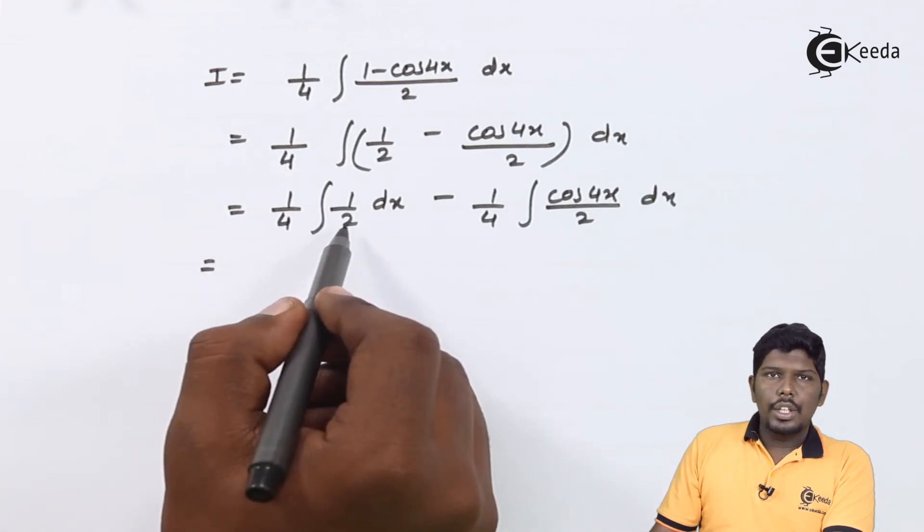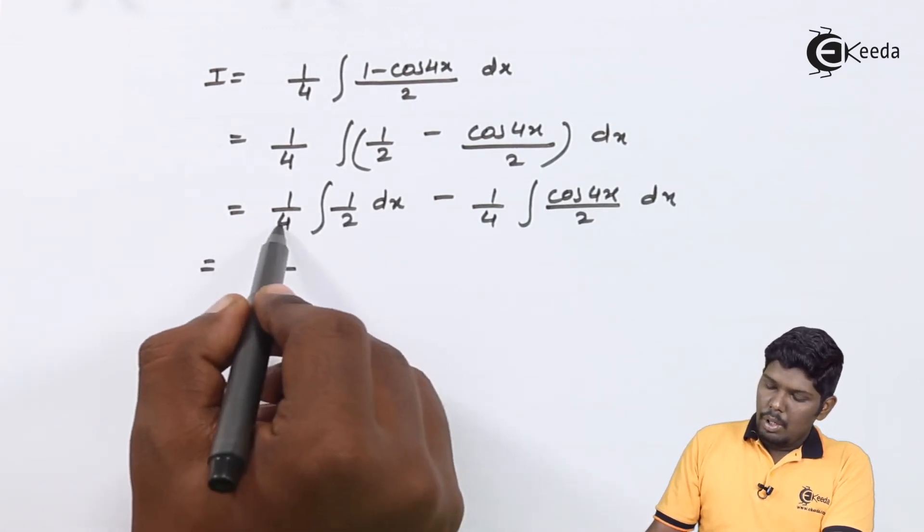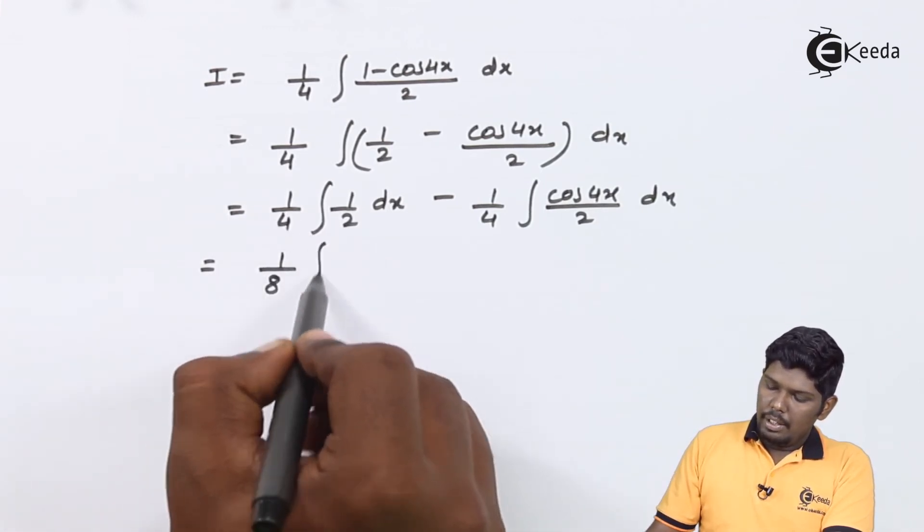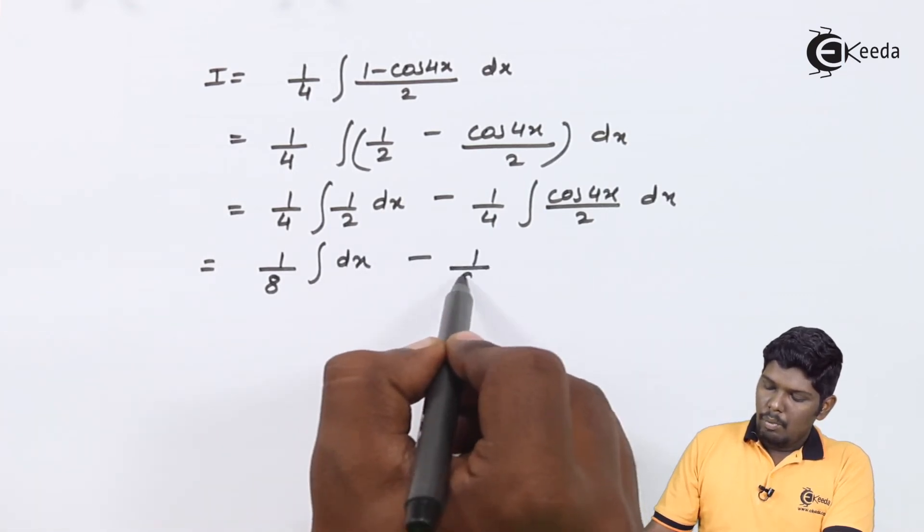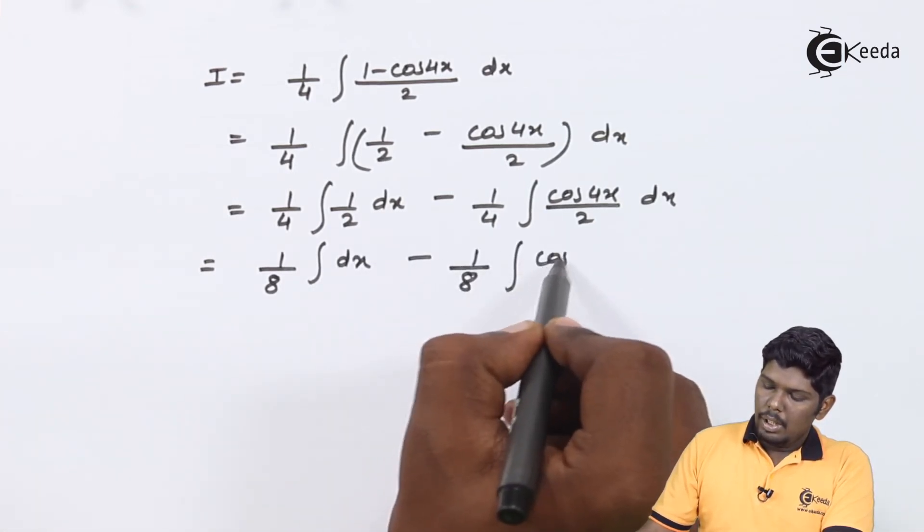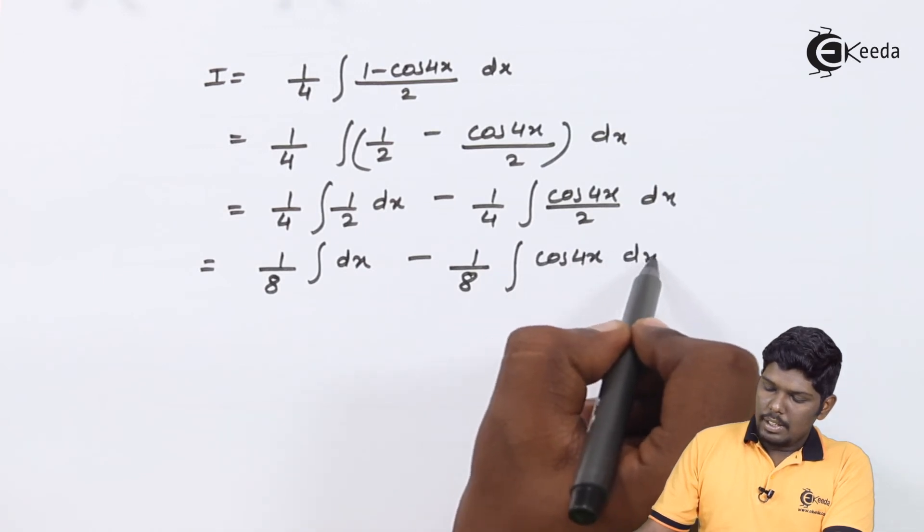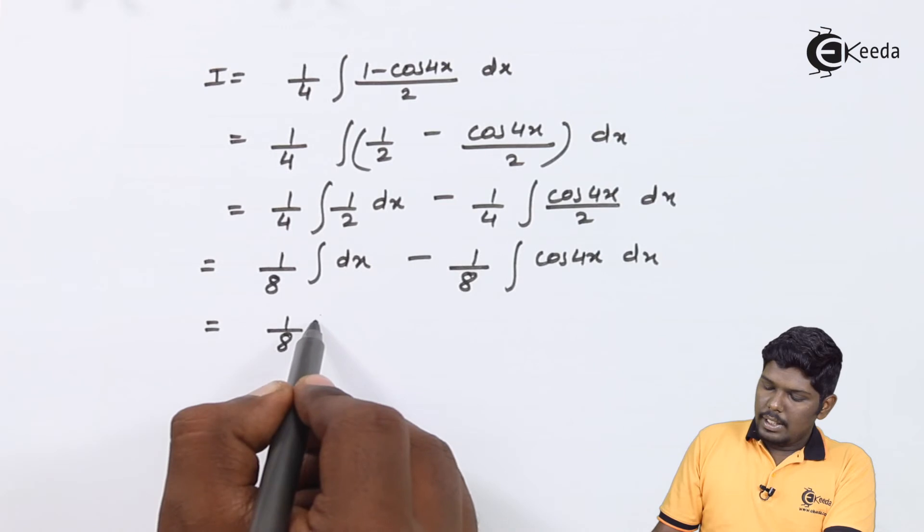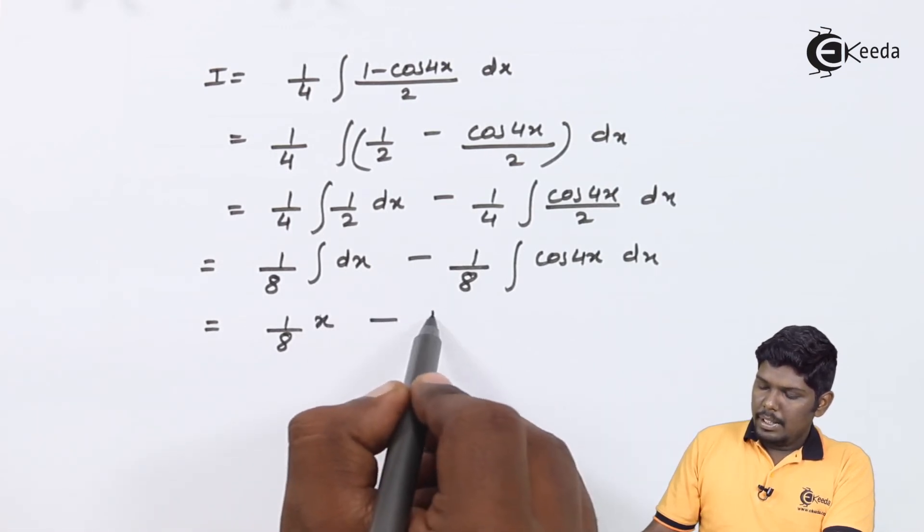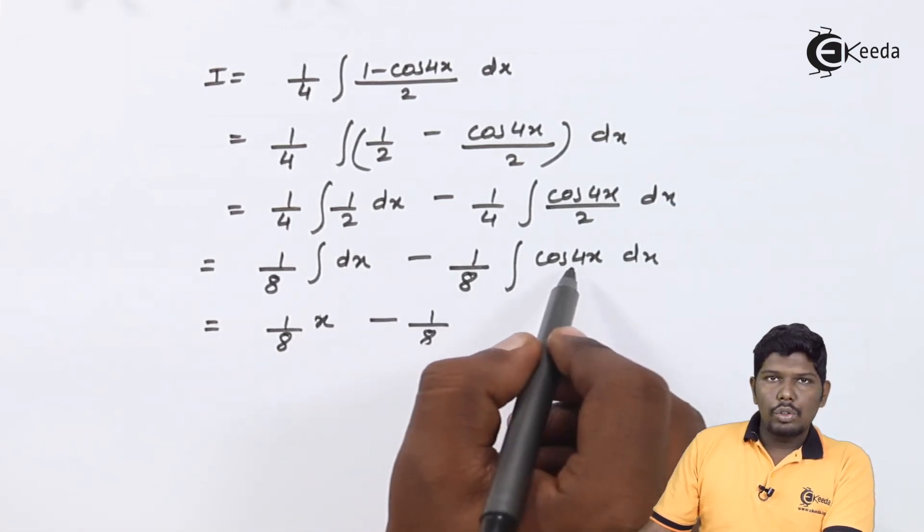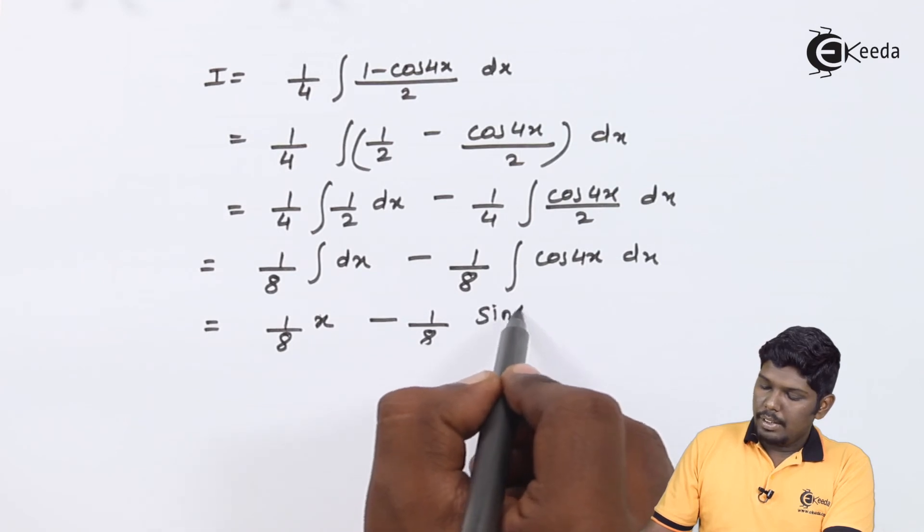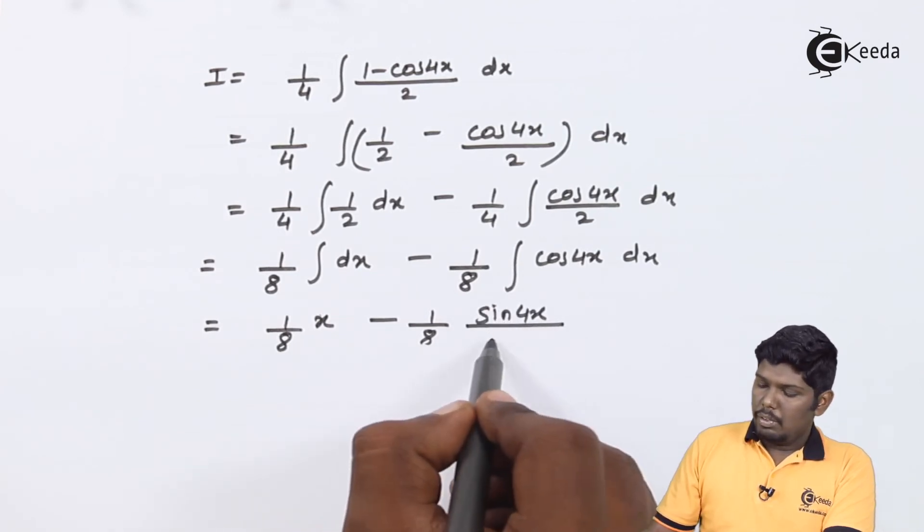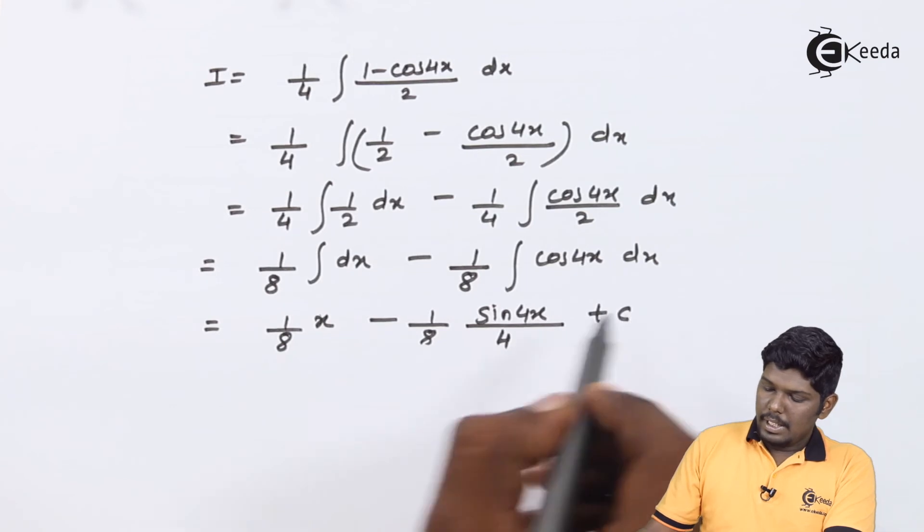Again taking constant outside, we have 1/8 ∫dx - 1/8 ∫cos 4x dx. Now, we know that ∫dx is x minus, cos 4x will give you sin 4x divided by derivative of 4x will be 4 plus c.